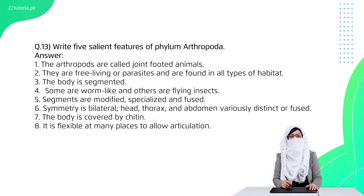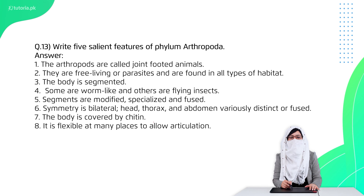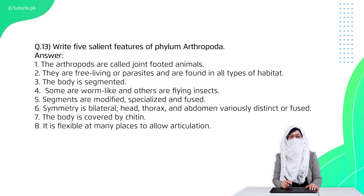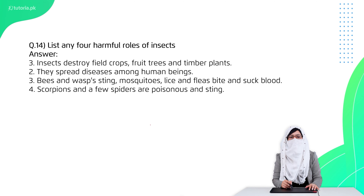Question 13 is: give salient features of phylum Arthropoda. Arthropods are jointed-footed animals. They are free-living or parasitic. Their sensory organs are well developed. They have modified segments, bilateral symmetry, and their body is protected by an exoskeleton made up of chitin.